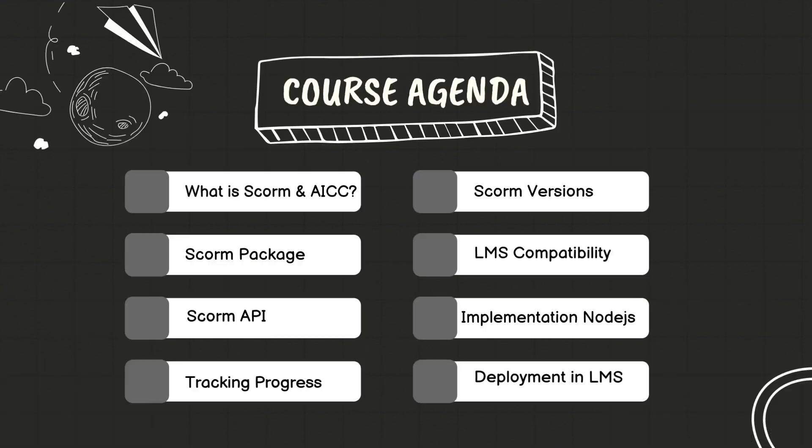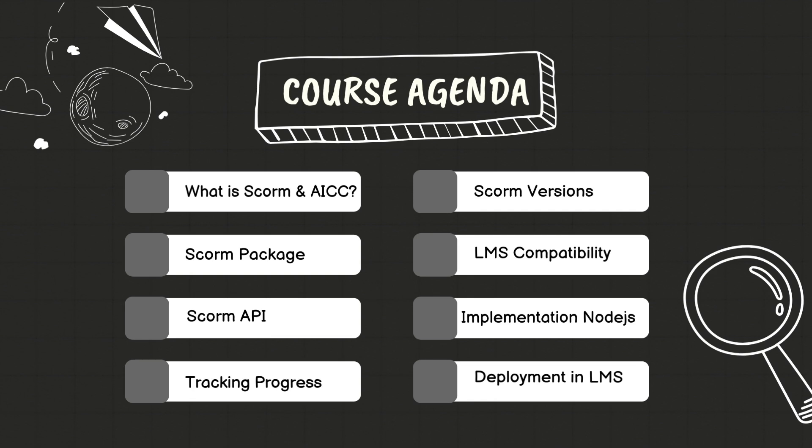In this course, we will cover the following topics: What is AICC and ISCOM? ISCOM versions and their unique features. Understanding how to create and structure an ISCOM package. Exploring the compatibility of ISCOM with various learning management systems. An introduction to the ISCOM API and its role in tracking learner interactions. Implementing an ISCOM course in LMS using Node.js. Methods for tracking user progress and performance in ISCOM, and finally, deployment of an ISCOM course in the LMS.